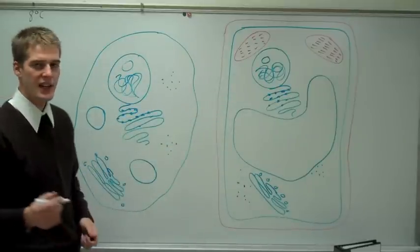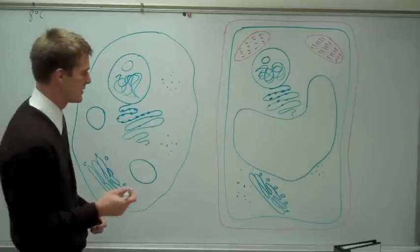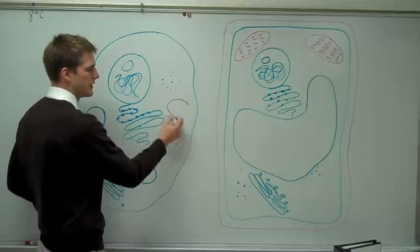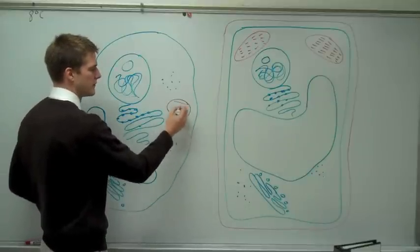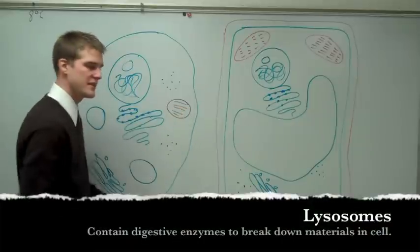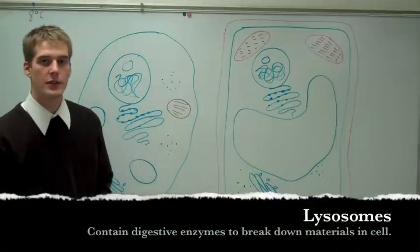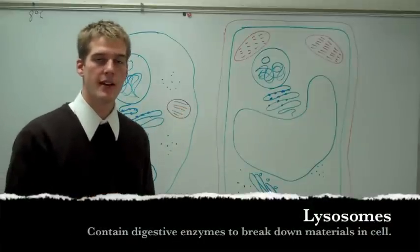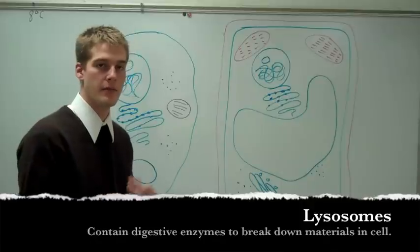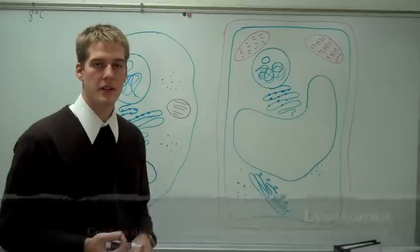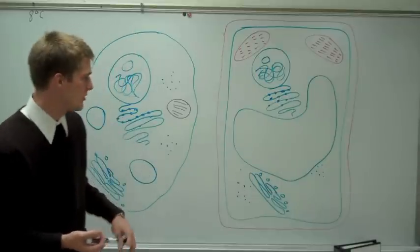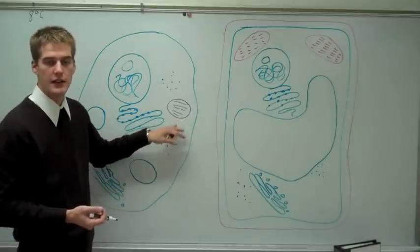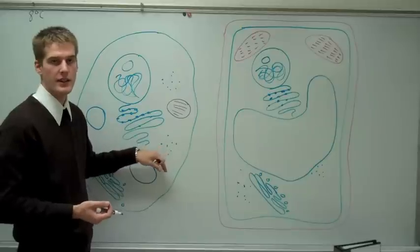In animal cells we have another organelle that's only found in animal cells, and that's called the lysosome. The lysosome is filled with digestive enzymes that help break down old cells and other dead material within the cell. The lysosomes break everything down.